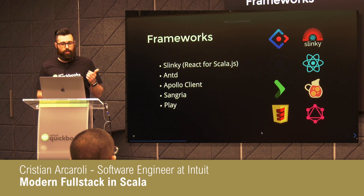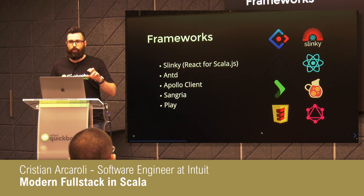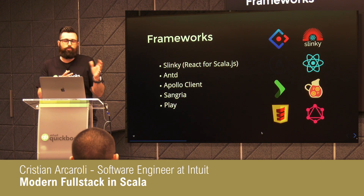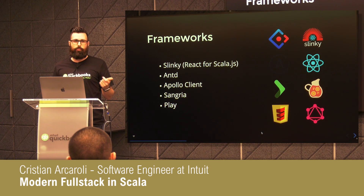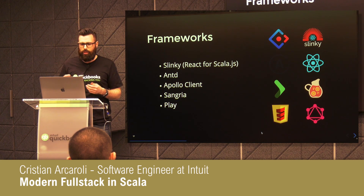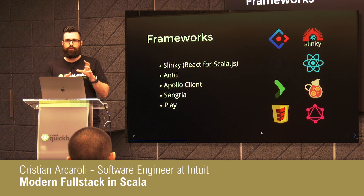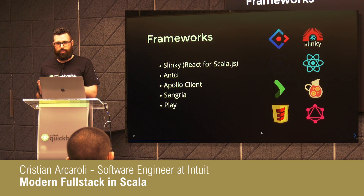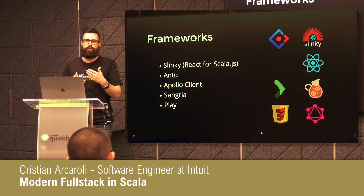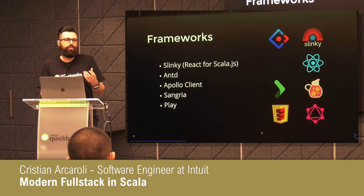I've used Slinky, which is basically the Scala porting of React — a library made with a macro that allows you to write components very similarly to how you write them in React. I have AntD, a library of React components used by Alibaba and Baidu, the second most widely used one after Material UI from Google. Apollo Client to make requests to the server and manage client state. Sangria, the GraphQL engine on the server side. Then I have Play, which gives me the server-side part, helps with library loading, and provides nice tools to deploy for production and development.